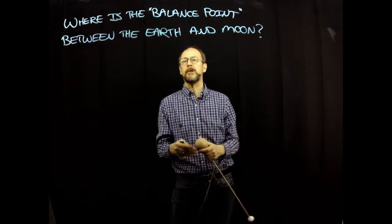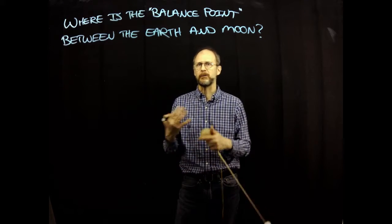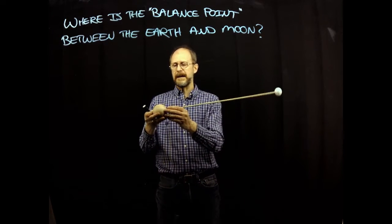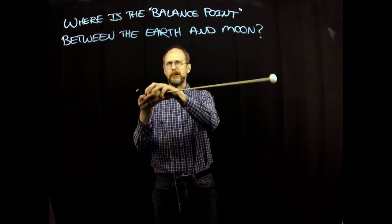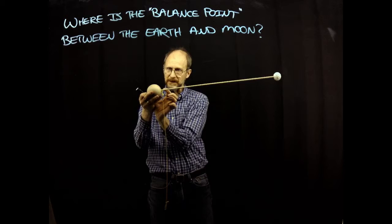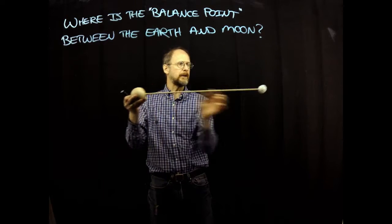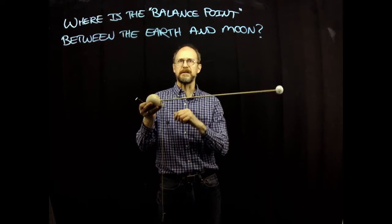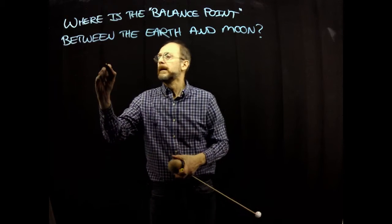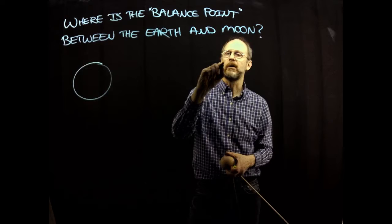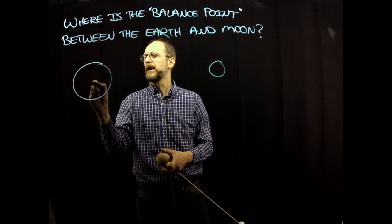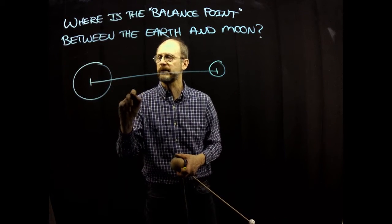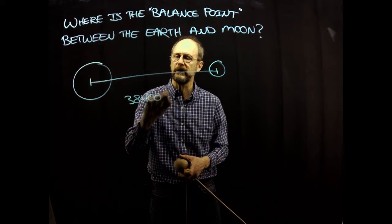So the question that I am raising now is where is the balance point between the earth and the moon? And it depends on their masses. The basic idea here is that the balance point is going to be closer to the heavier object. I'm going to draw the earth and I'm going to draw the moon. These are not to scale, but this distance from center of the earth to the center of the moon is about 384,000 kilometers.